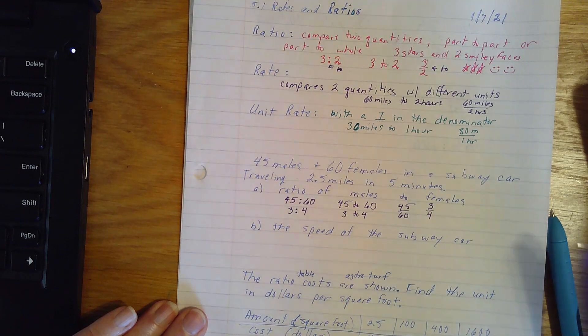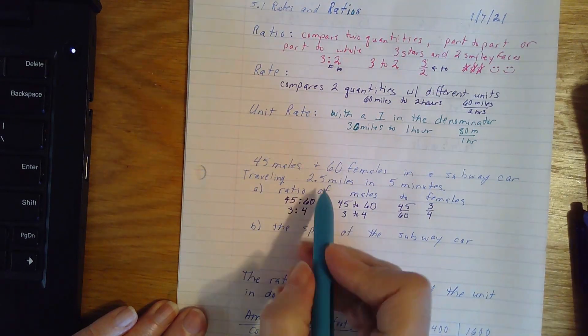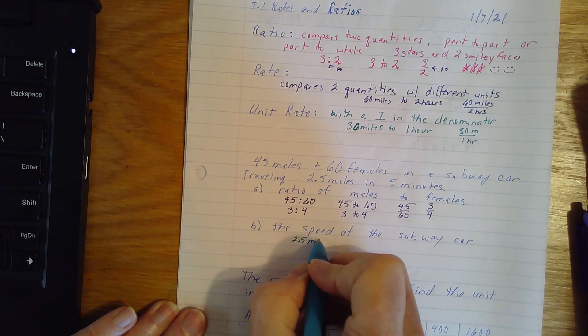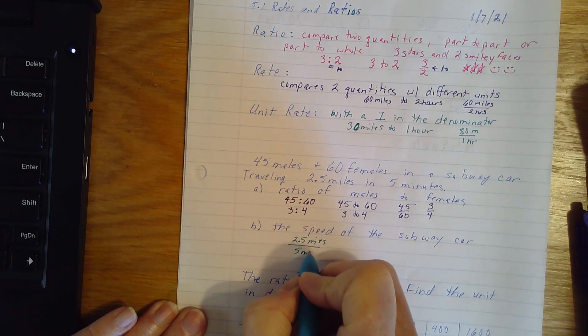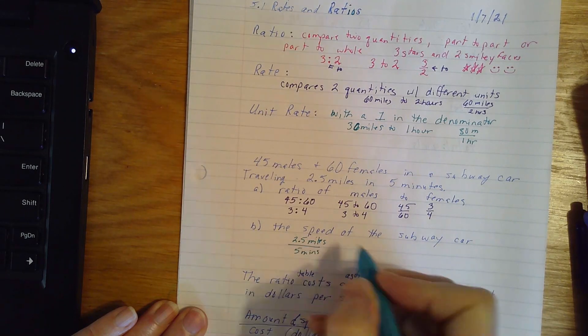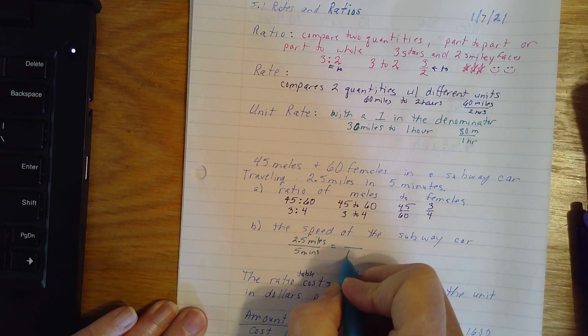The speed of the subway car. It's 2 and a half miles in five minutes. We're looking for a rate. Speed is another way to say rate. So I want to go down to one minute.